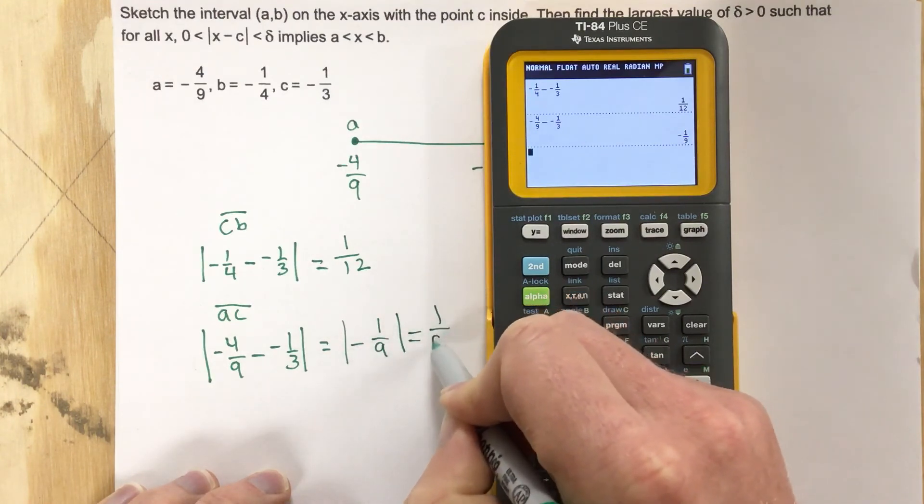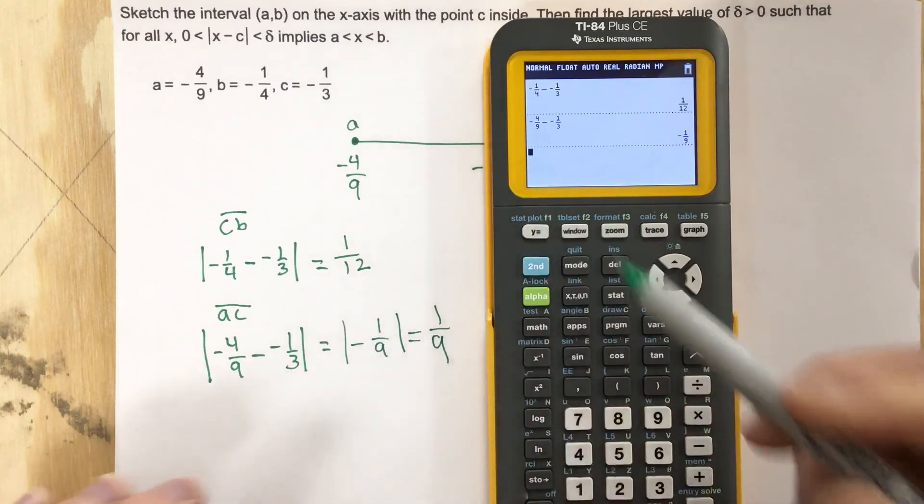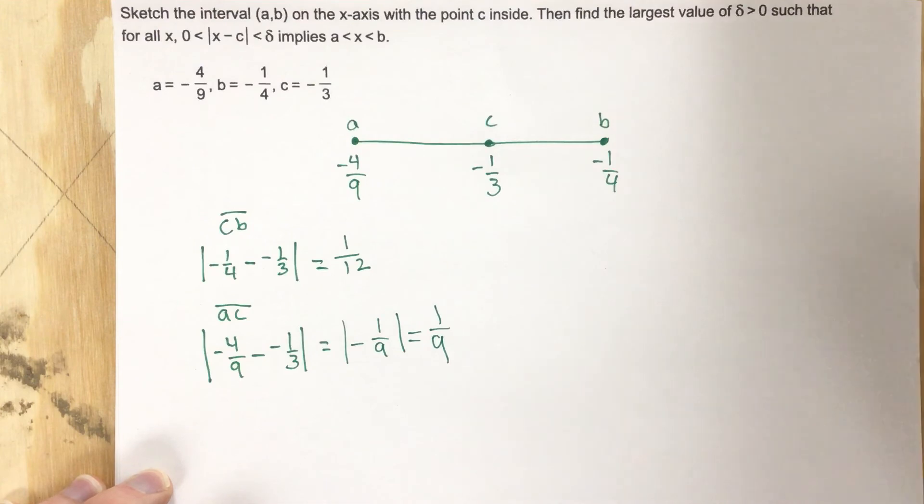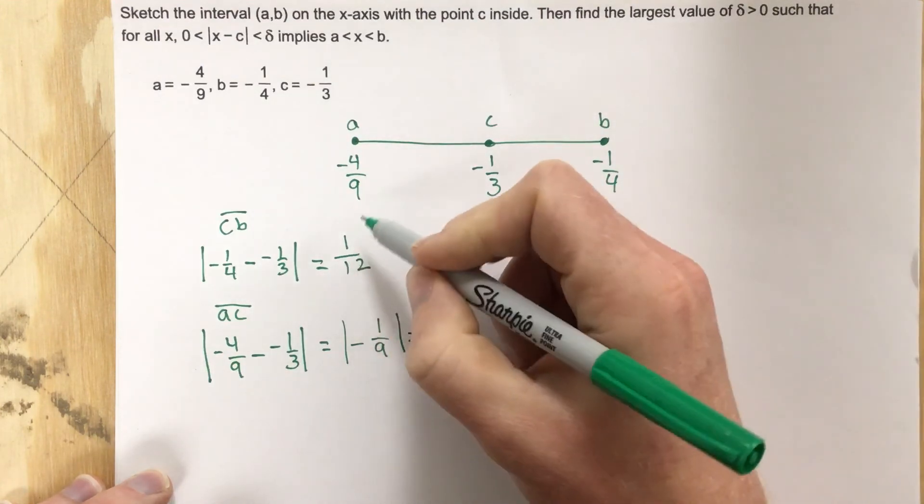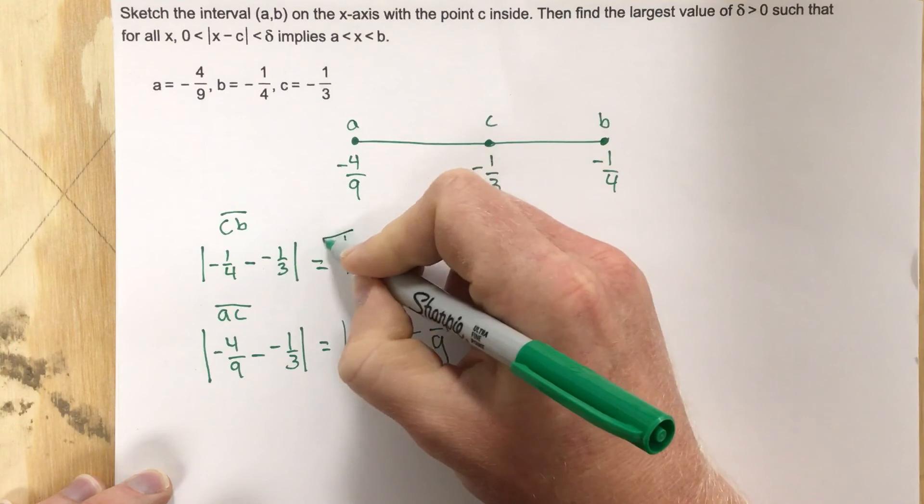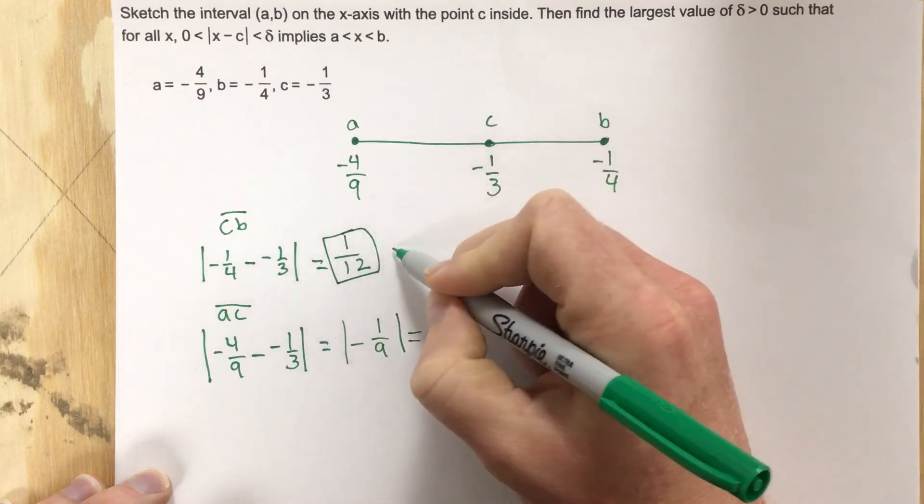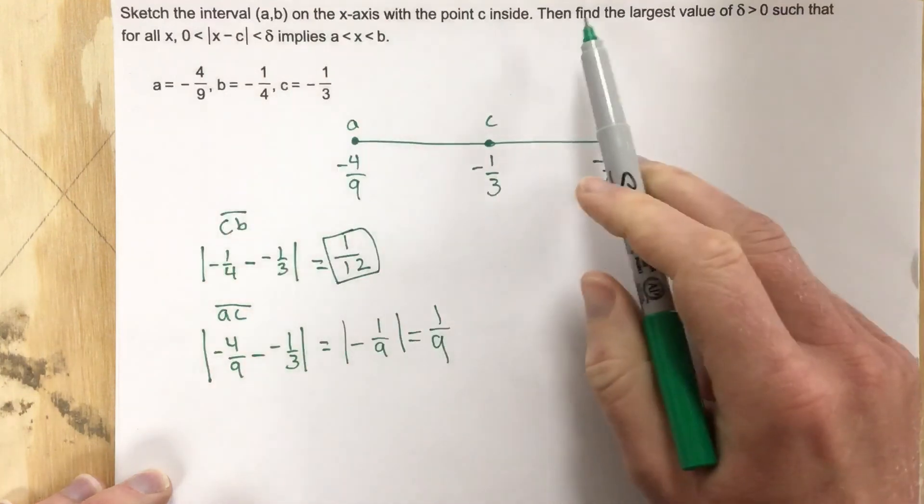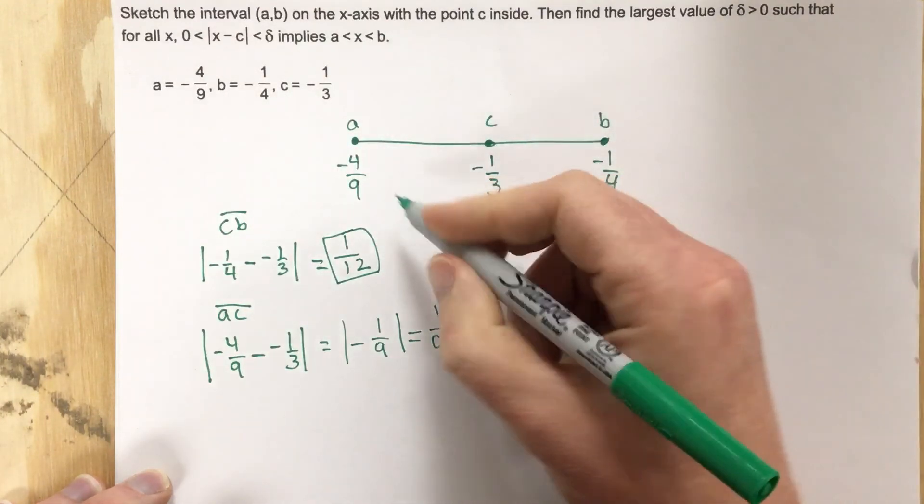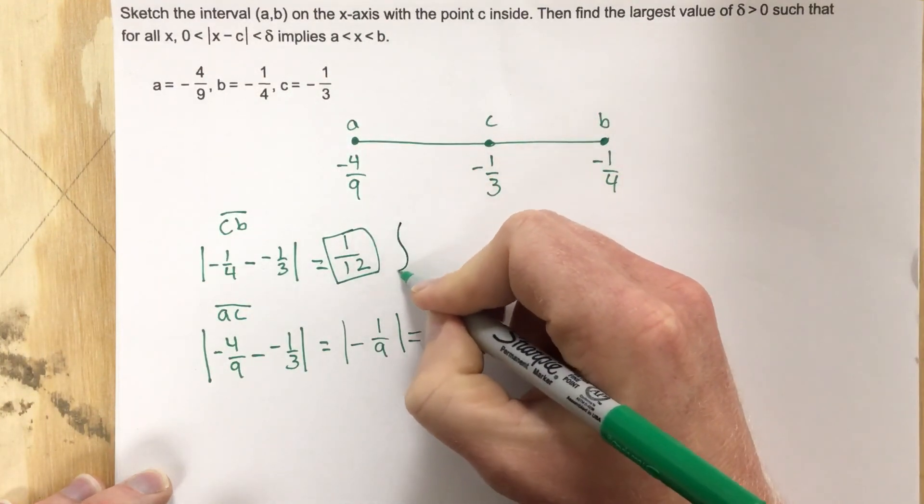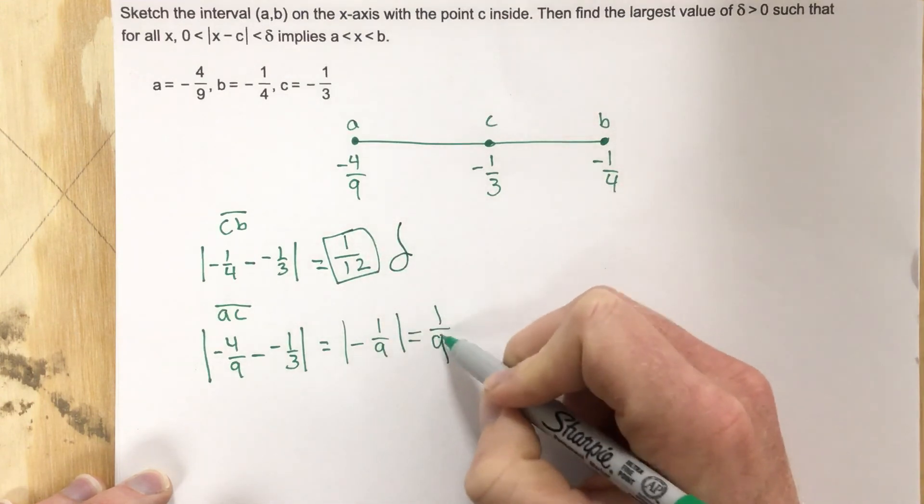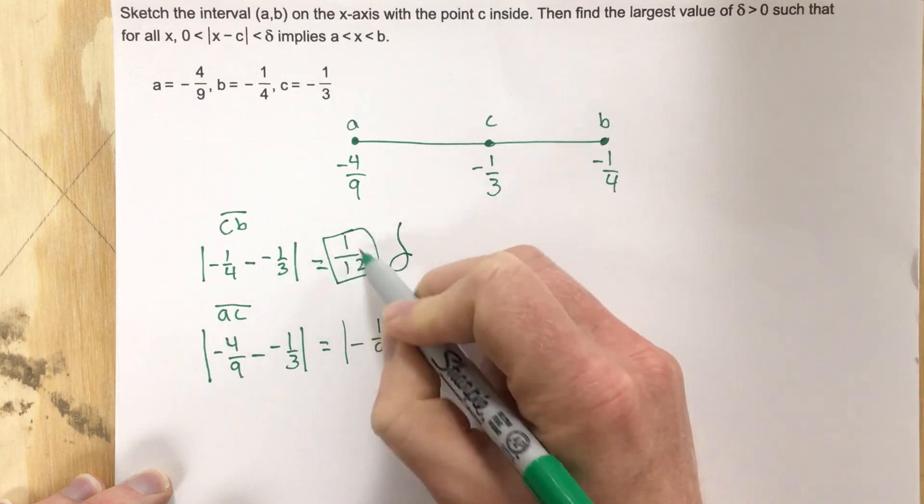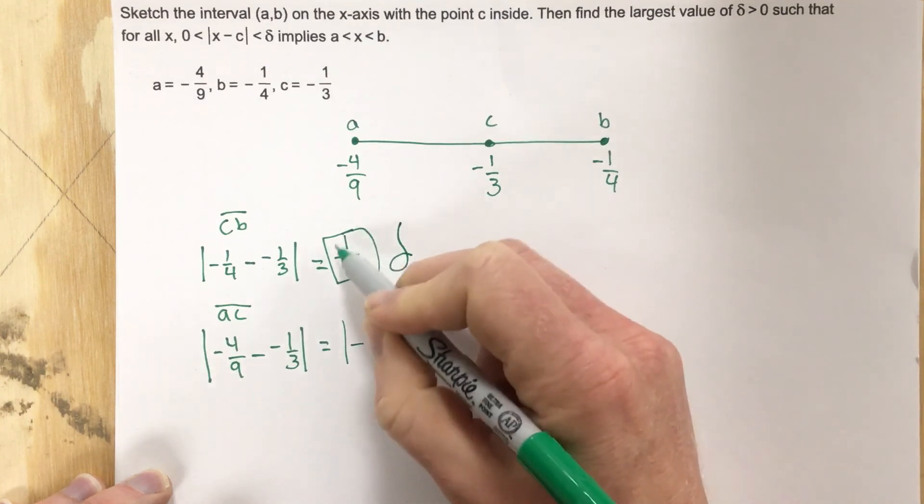Now the question is which is smaller, is one twelfth smaller or is one ninth smaller? Well, one twelfth is smaller. That means this gap here, this delta value, so this is going to be our delta value. That's what they're asking us for here. So the largest value of delta that we can use is one twelfth, because we don't want to use this one ninth delta because this gap is smaller than it.